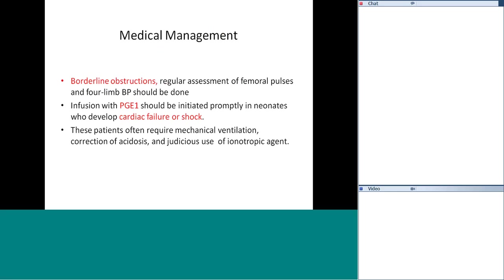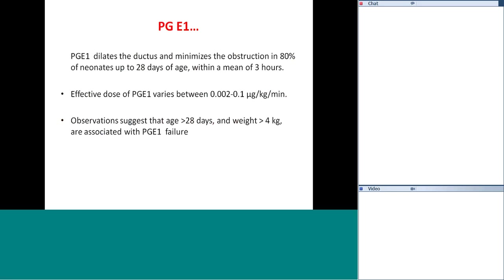Unless you have relieved the coarctation, you should not start very high-dose inotropes, because that keeps the heart working against forward obstruction. Once the coarctation is relieved, then inotropes have their role. Prostaglandin dilates the ductus and minimizes the obstruction in 80% of neonates up to 28 days of age, within a mean of about 3 hours. The effective dose varies between 0.002 to 0.1 microgram/kg/min. Beyond a month of age, prostaglandin usually does not work.